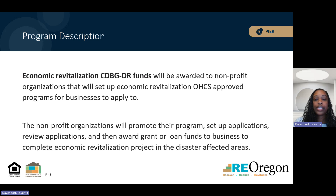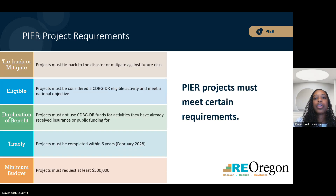Under the PEER Program, economic revitalization funds will be awarded to nonprofit organizations that will set up OHCS-approved programs for businesses to apply to. These organizations will be responsible for developing and promoting their program as well as implementing the program from application to closeout. PEER projects must meet certain requirements: projects must be timely and follow a clear schedule showing project completion before February 2028, each project must have a minimum budget of $500,000, each project must tie directly back to recovery from the disaster event or mitigate against future risk, and each project must be eligible under CDBG-DR requirements.